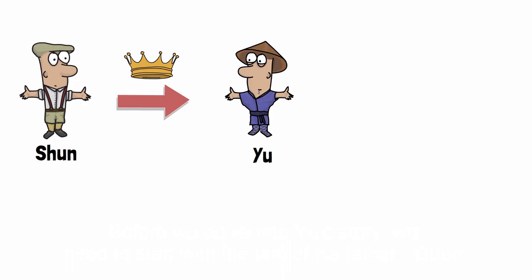Hello everyone, I'm Lazy Ant. In the last video, we talked about the story of Shun, the last of the five emperors in Chinese mythology. This episode is about Shun's successor, the story of Yu.